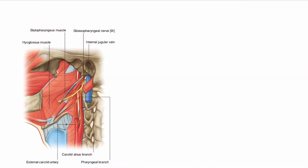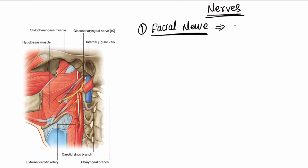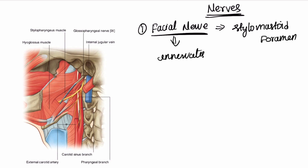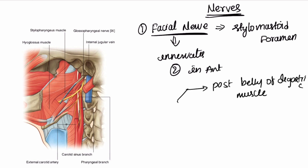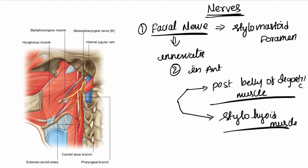Now let us discuss about the nerves. The first one is the facial nerve, which emerges from the stylomastoid foramen. The facial nerve innervates two muscles in the anterior triangle: the posterior belly of the digastric muscle and the stylohyoid muscle. The platysma, which is the roof of the anterior triangle, is also innervated by the facial nerve.